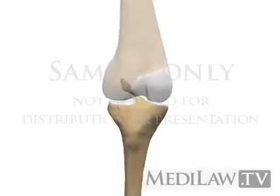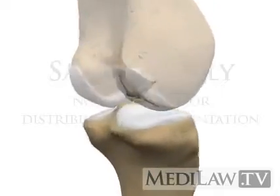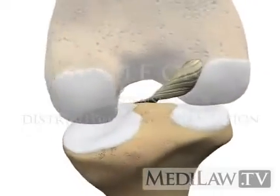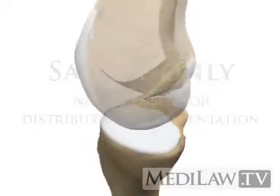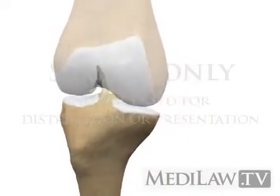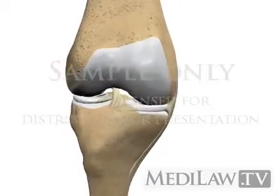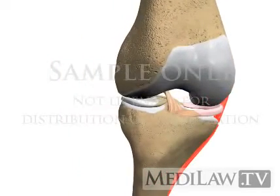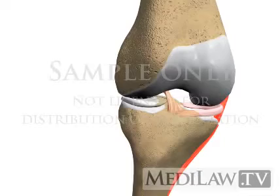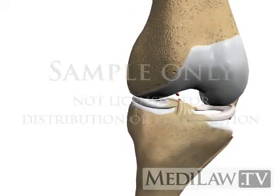An intact anterior cruciate ligament is vital for knee stability and durability over time. Excess stretching forces applied to the anterior cruciate ligament can cause a partial tear or complete rupture of this ligament.